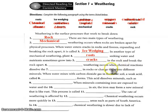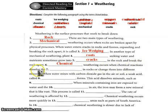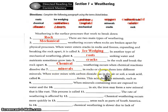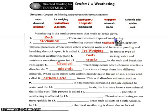Chemical weathering occurs when chemical reactions dissolve the minerals — the things that make up the rock — and break them into different minerals. So with physical or mechanical weathering, things are just cracked or broken, whereas in chemical weathering, actual new and different minerals are formed. For example, when water mixes with carbon dioxide gas in the air, a weak acid called carbonic acid forms. This acid dissolves minerals such as calcite, which is a typical mineral in rock.